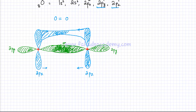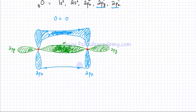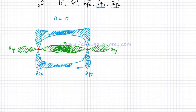The maximum electron density, or the highest probability of finding an electron, would be right in the middle, because both oxygen atoms are attracting electrons equally. This would happen with the other lobe as well — they are going to merge, and the region of maximum electron density would be right in the middle. So there's going to be an overlap above and below the axis connecting the nuclei. This is called a pi bond.